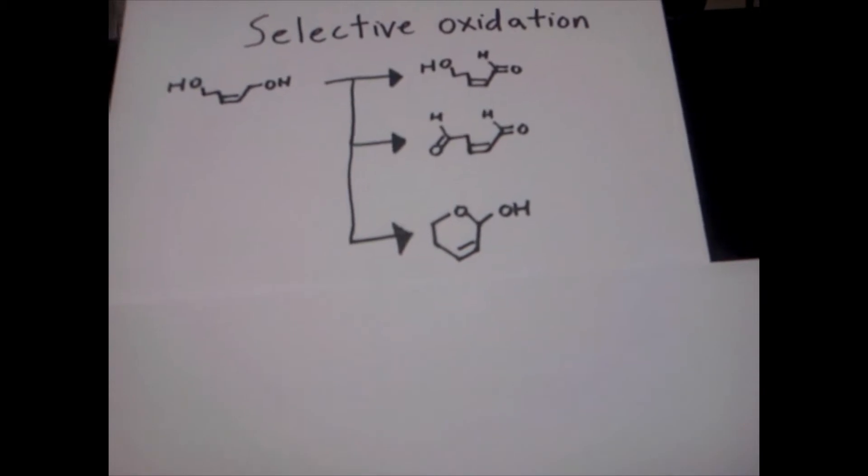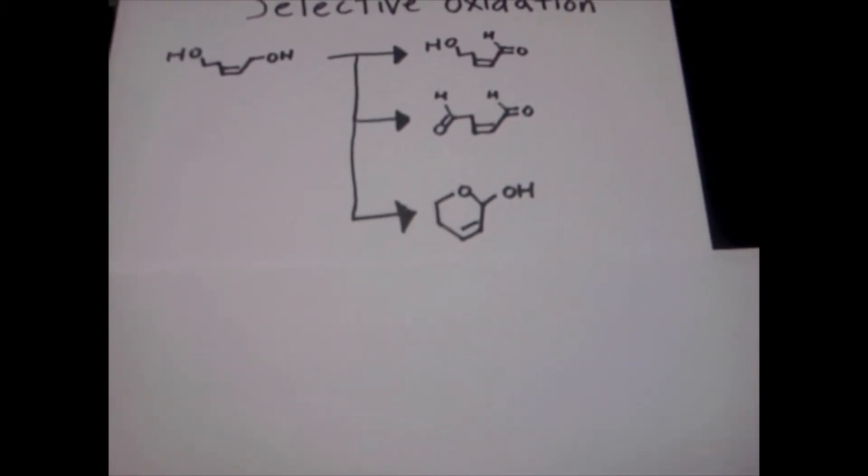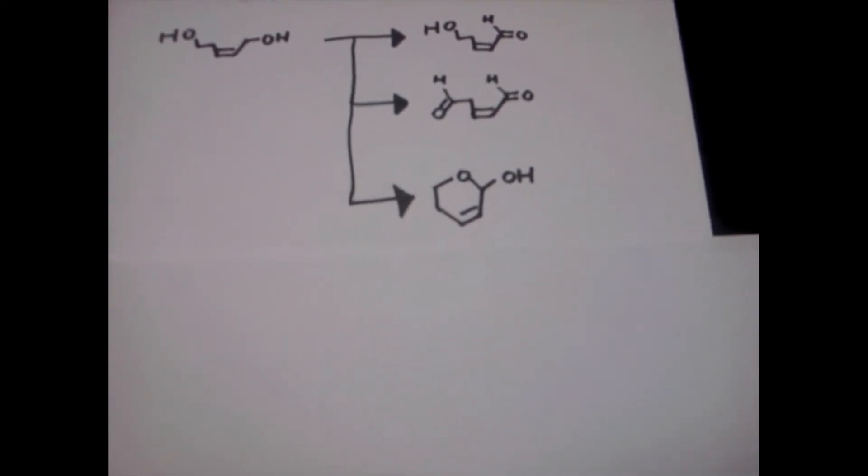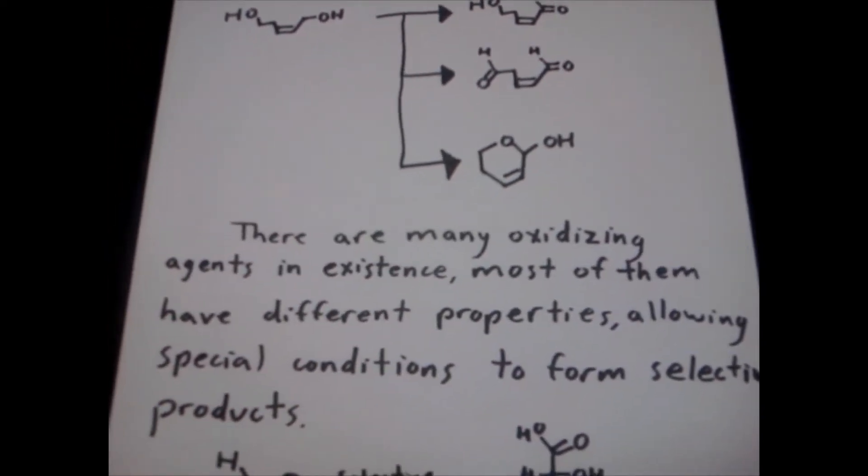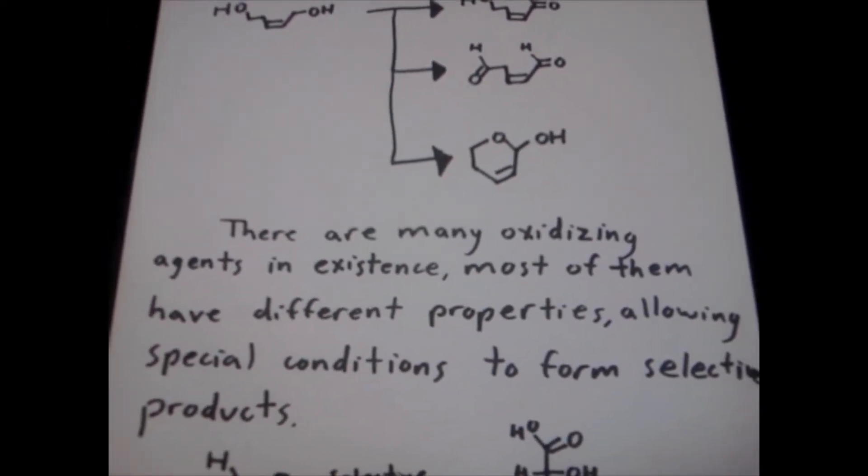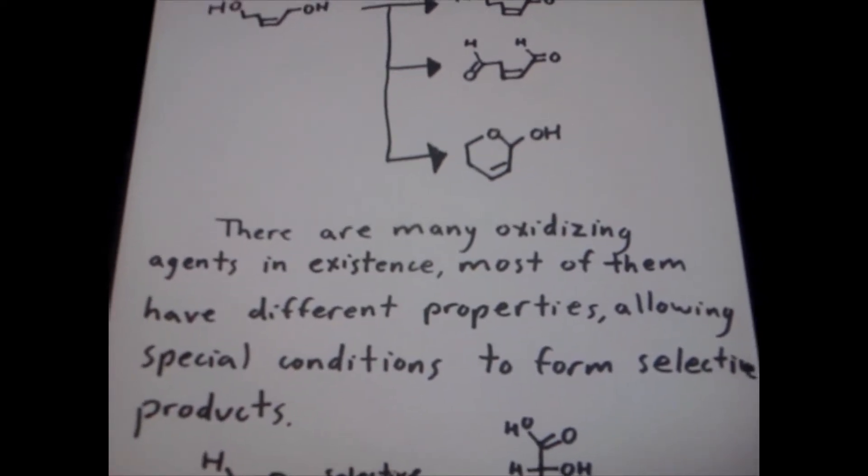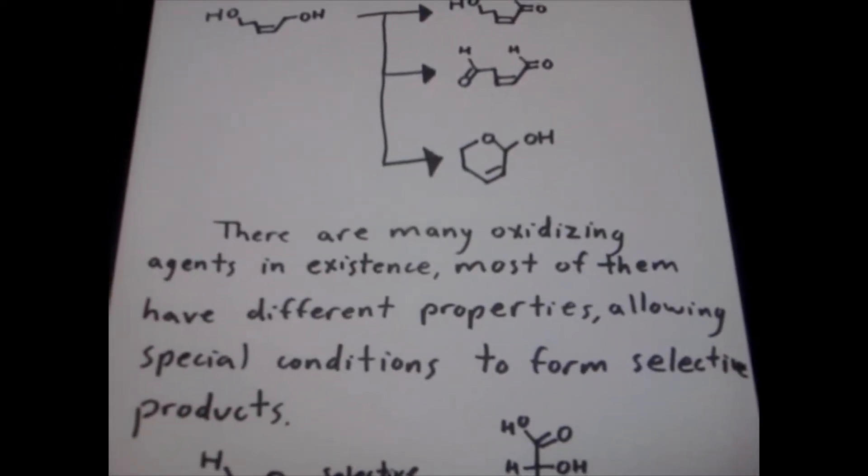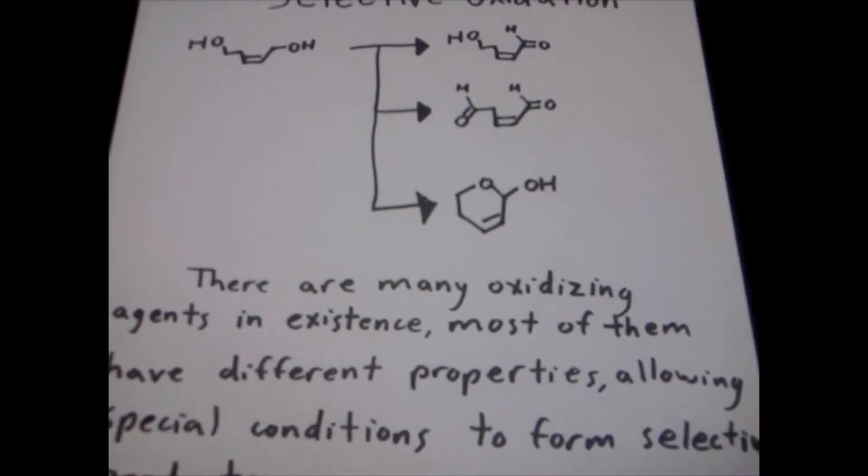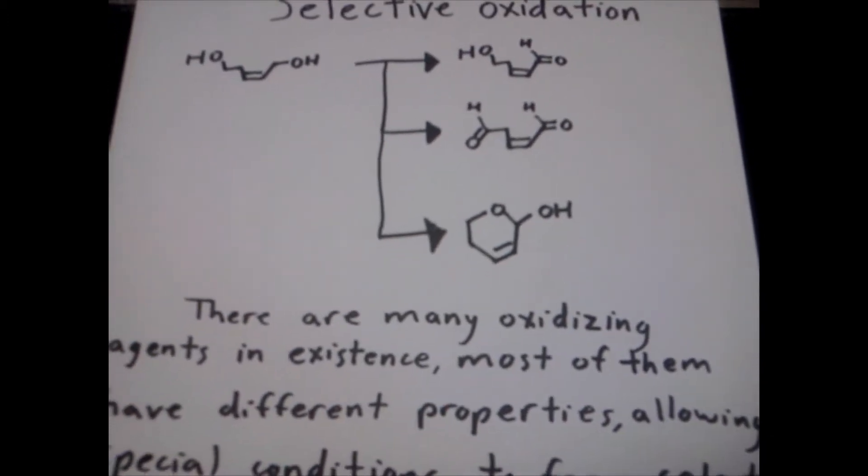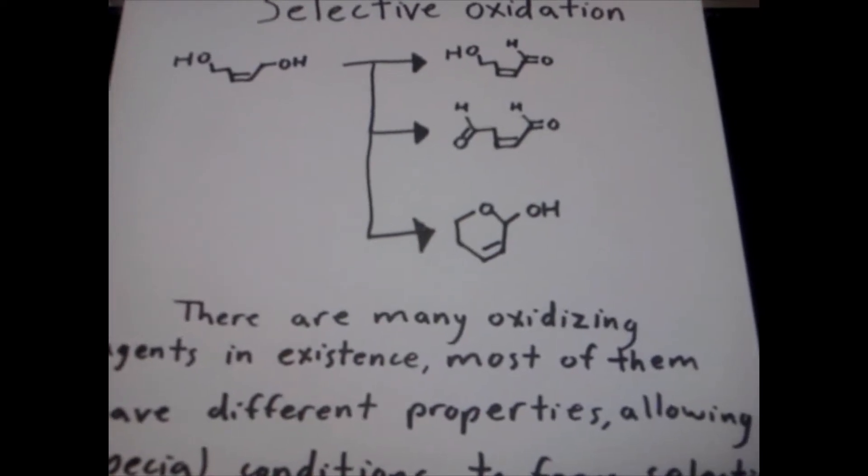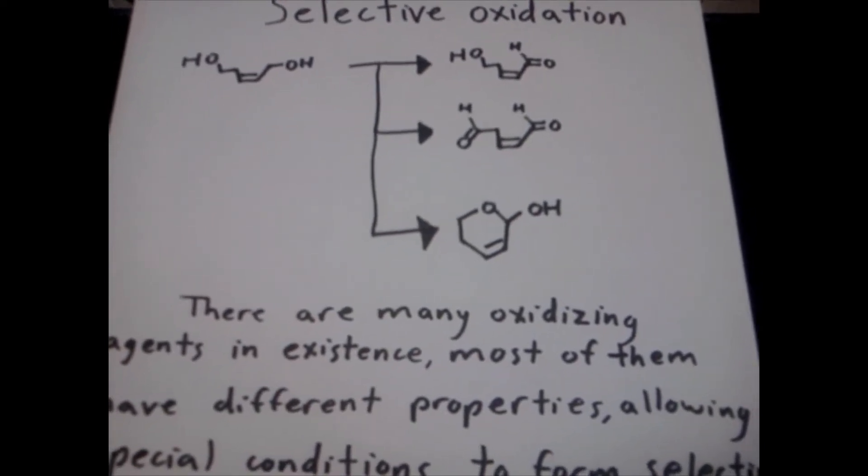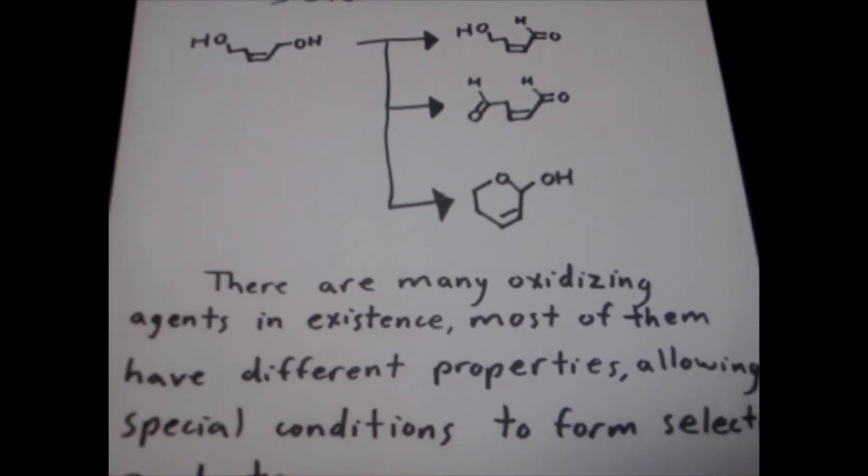So let's get started on what makes this reaction possible. How can you just take one reactant and make three totally different reactants? Here's how. There are many oxidizing agents in existence, and most of them have different properties, allowing special conditions to form selective products. Using our chemical intuition and some ingenuity, we are going to answer this question and ace this next test.